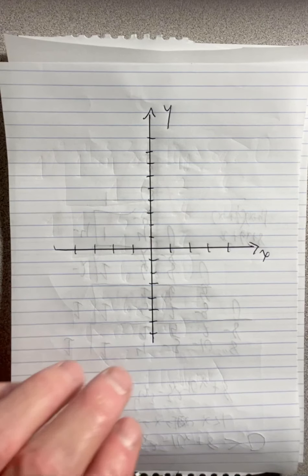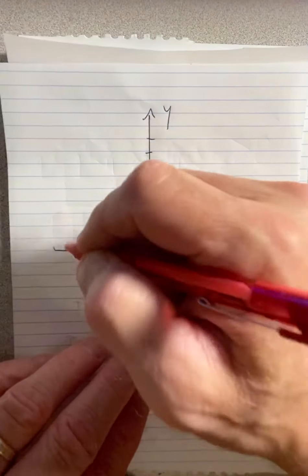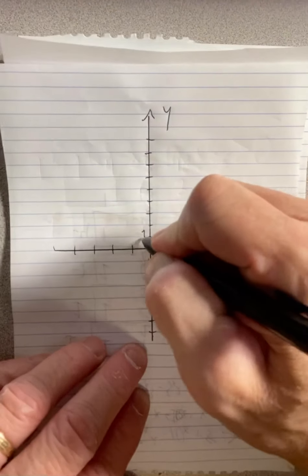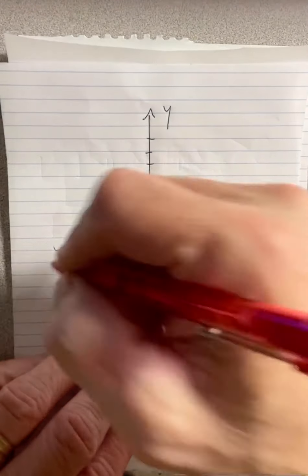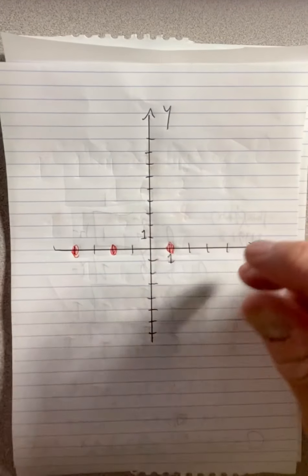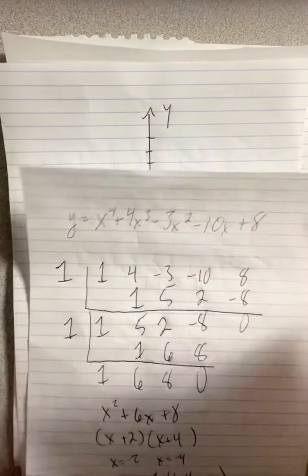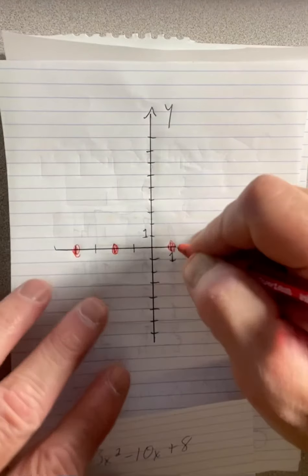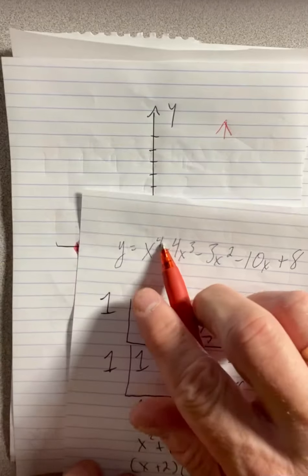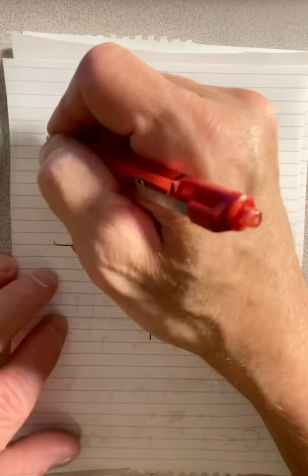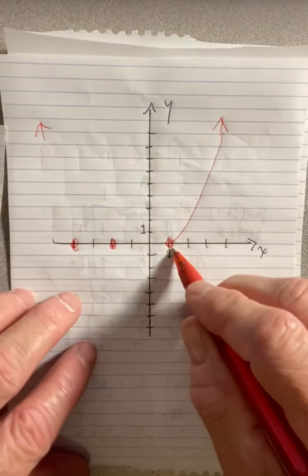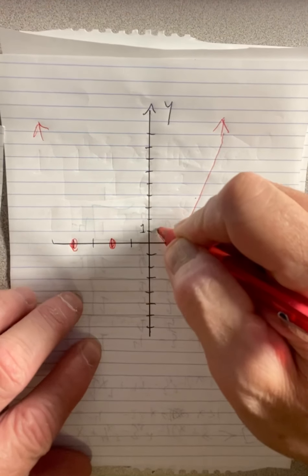Remember there were roots at negative four. Let's put a scale on here. Let's go by ones and ones. Negative four is over here. Negative two is here. They were both roots. One was a root. The leading coefficient is one, so it rises on the right. But the degree is even, so it does the same on the left. So it must be coming up. But one was a double root, so I know it turns around here.